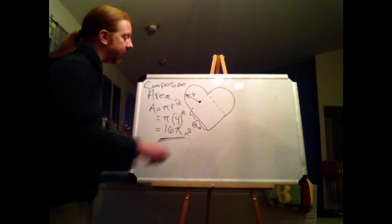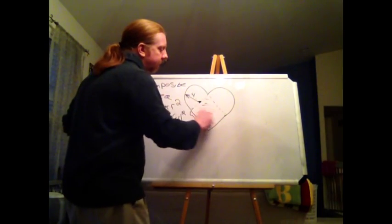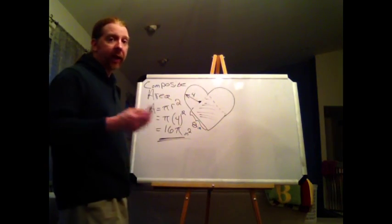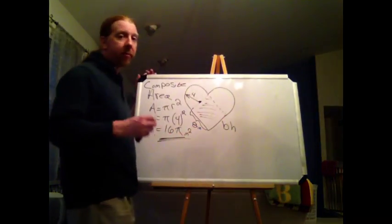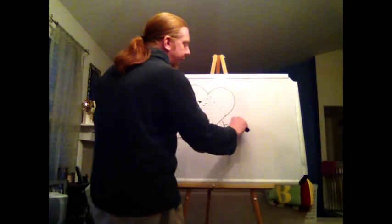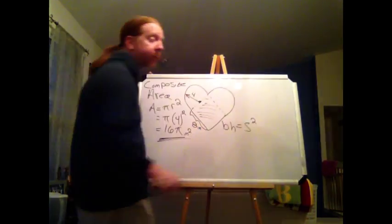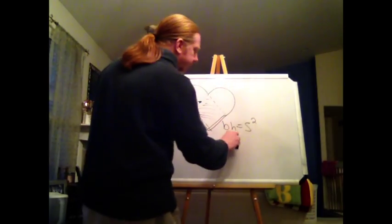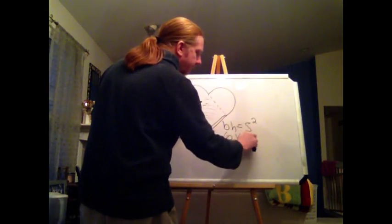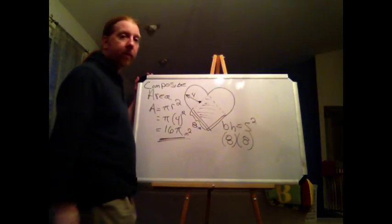Now when I want to take a look at this square here in the middle of my picture, again, I know the area of the square. I could talk about that as base times height or I could talk about it as side squared. Either way, it's 8 by 8, that's 64.